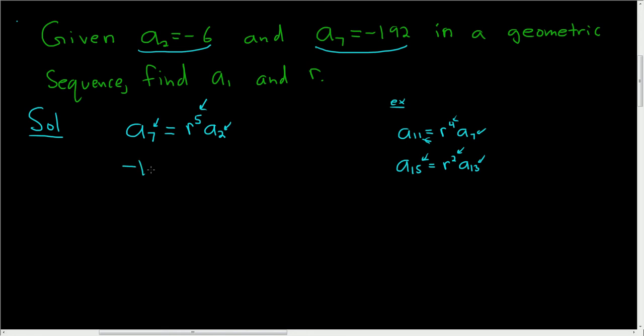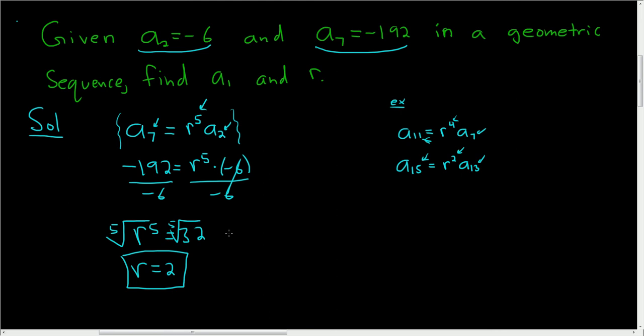A sub 7 is negative 192, r we don't know, so we have r to the 5th, and a sub 2 is negative 6. Divide both sides by negative 6, that gives us r to the 5th equals 32. When we take the 5th root of both sides, we end up with r equal to 2. So we have r. Again, the key is this first equation here, that's the most powerful thing we have.